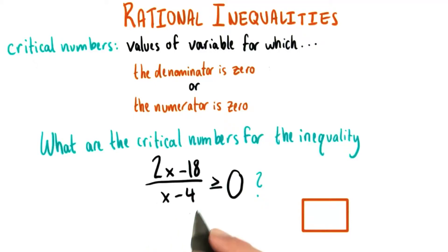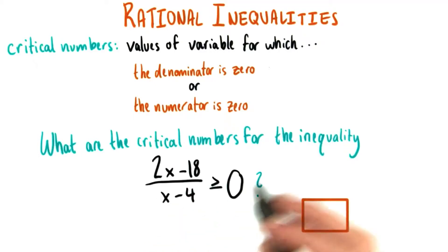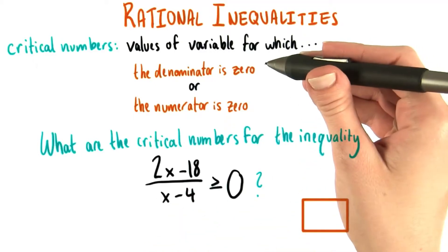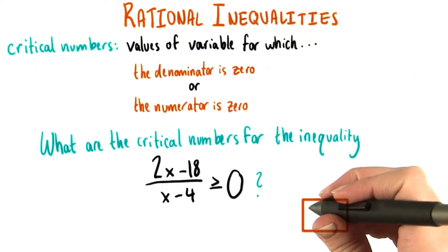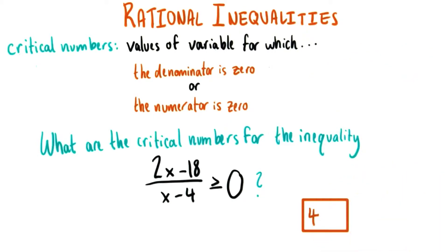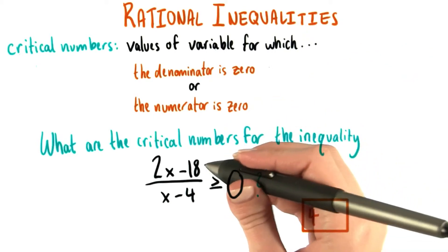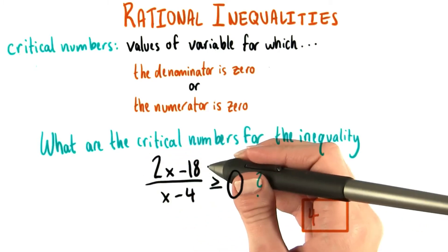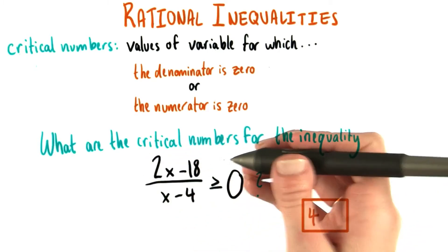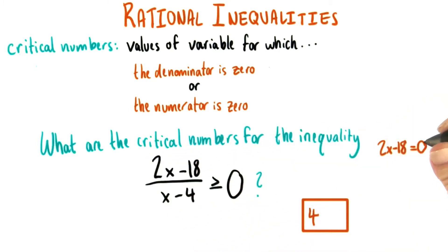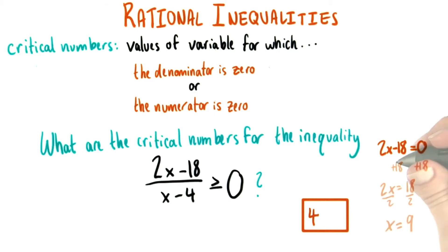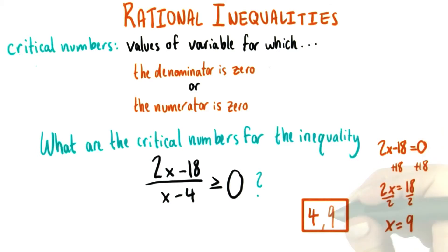We already said that the value of x that makes the denominator equal to 0 — which is the first way that we can find a critical number — was 4. So that will be one of them. The other way we can look for critical numbers is to set the numerator equal to 0 and solve for x. So if we set 2x minus 18 equal to 0, we end up with x equals 9. So that must be our other one.